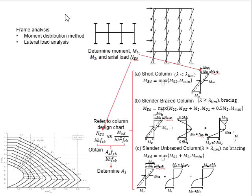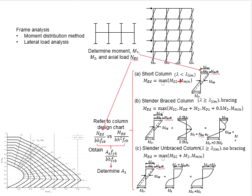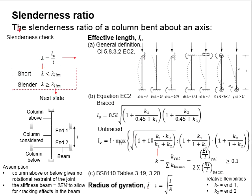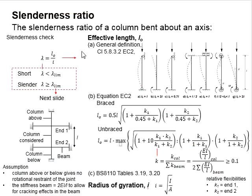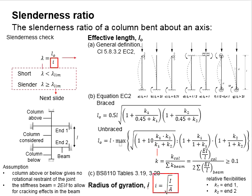Now that you have obtained the moment and the axial load acting on the columns from frame analysis, you will need to classify the columns — whether it is a short column or a slender column. This is done by checking the slenderness limits. The slenderness ratio is determined based on the effective length divided by the radius of gyration. The radius of gyration is given by this formula.